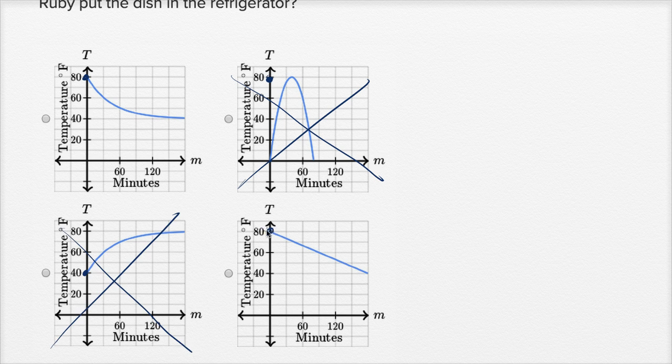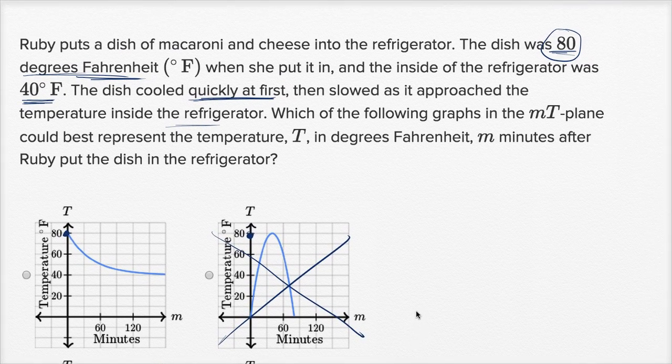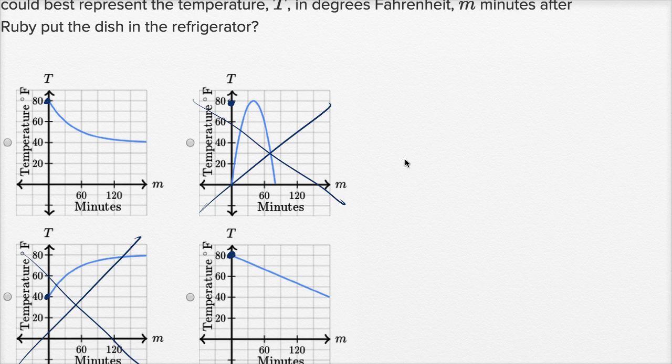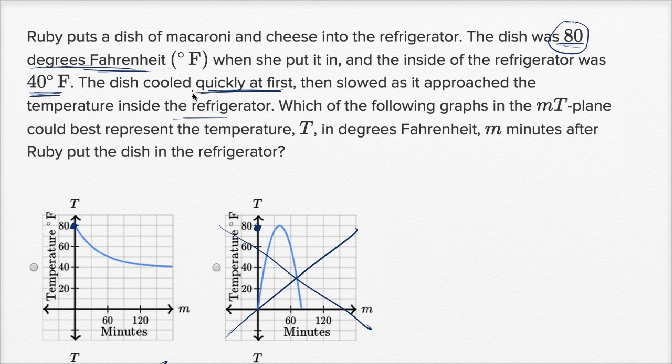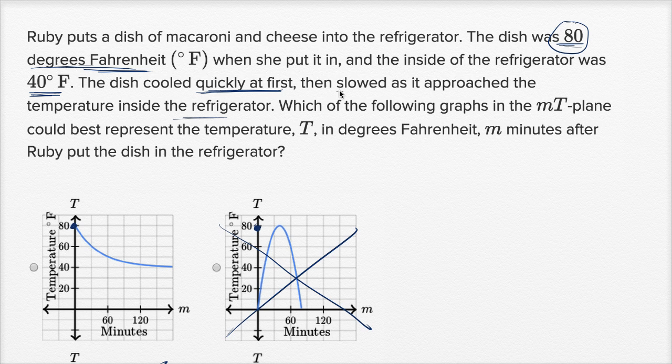This one also starts at 80 degrees. Now let's think about the shape of what the curve should be. They say the dish cooled quickly at first, then slowed as it approached the temperature inside the refrigerator.